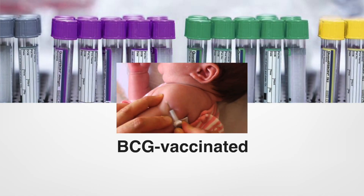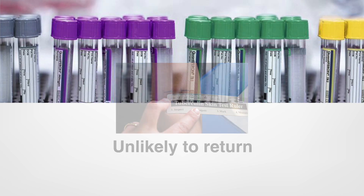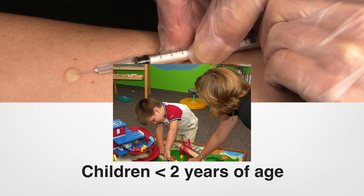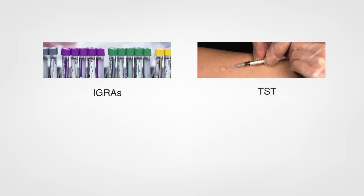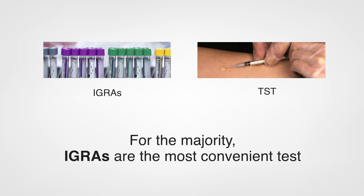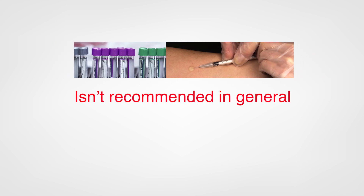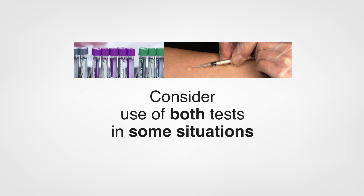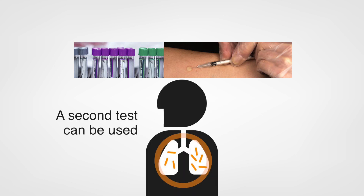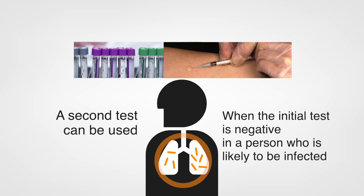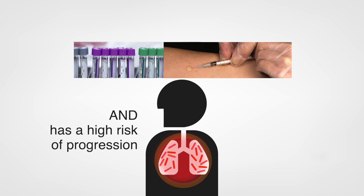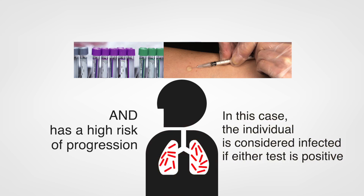While the TST is acceptable in most situations, IGRAs are preferred in people who are BCG vaccinated or who are unlikely to return to have their TST read. TSTs are preferred for children younger than 2 years of age, since there is limited data on IGRA use in this population, though some experts will use IGRAs in children as young as 1 year of age. Consider availability, logistics, and resources when selecting a test. For the majority, IGRAs are the most convenient test. Testing with both TST and IGRA isn't recommended in general, but there are situations where using both tests should be considered, particularly when a missed LTBI diagnosis would be significant. A second test can be used to increase sensitivity when the initial test is negative in a person likely to be infected with a high risk of progression; in this case, the individual would be considered infected if either test is positive.